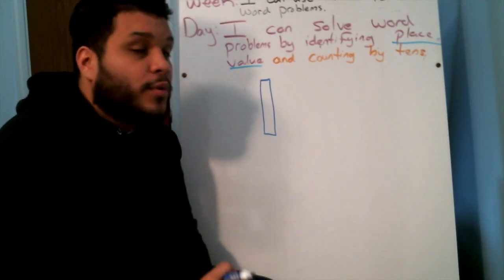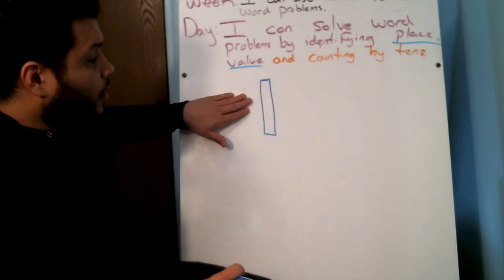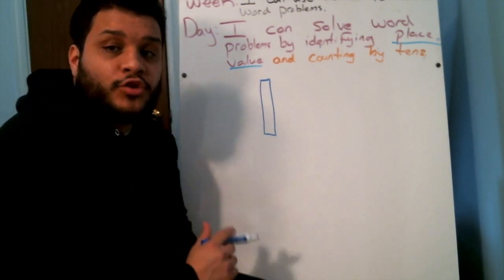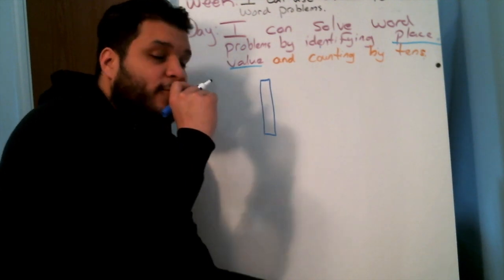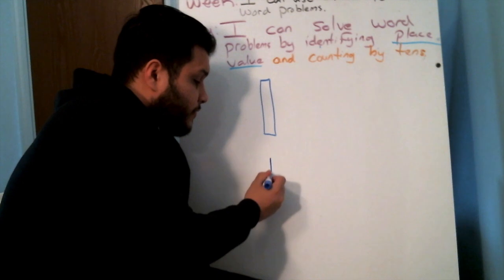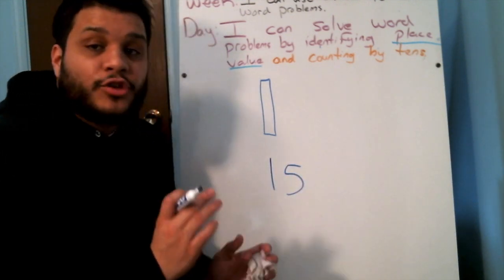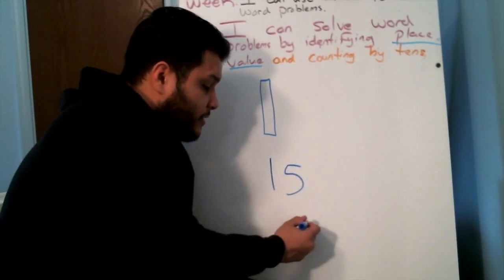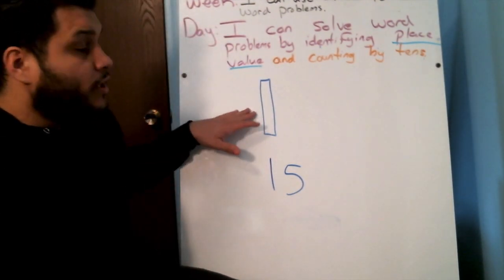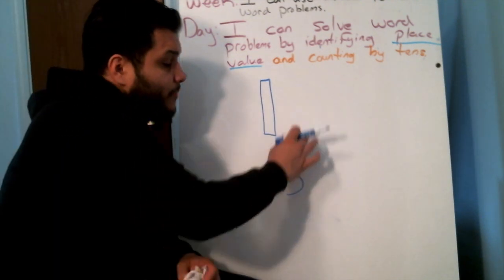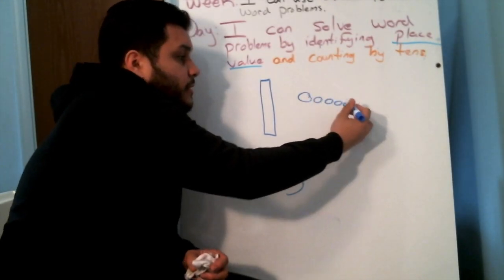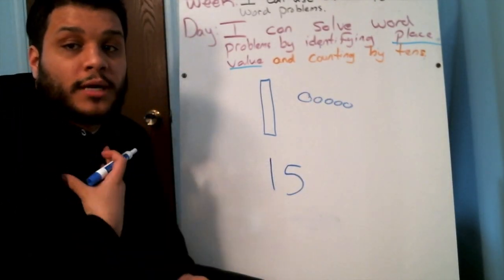We know that whenever we want to represent a tens, we draw our rectangular cube. The reason why we draw this is because if we ever need to show a picture — so if I wanted to show 15, I don't want to draw 15 counters because that's going to take so long. This represents 10, and then how many more counters will I need to draw? Five counters. So it allows me to work a lot faster.